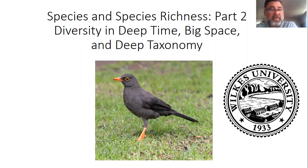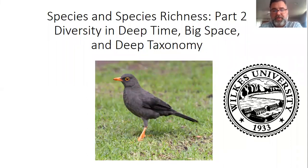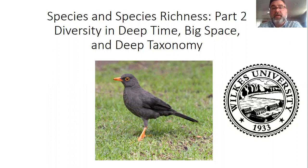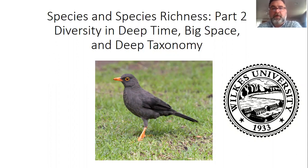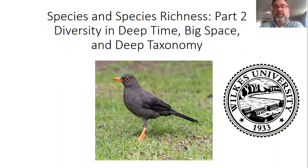This lecture is the second part of the diversity lectures related to biodiversity. This one is about diversity in deep time — going back to the beginning of life as we know it. Big space would be how diversity ranges across the entire planet, and deep taxonomy is talking about the taxonomy among the largest groupings, like the diversity of plants versus animals and bacteria.